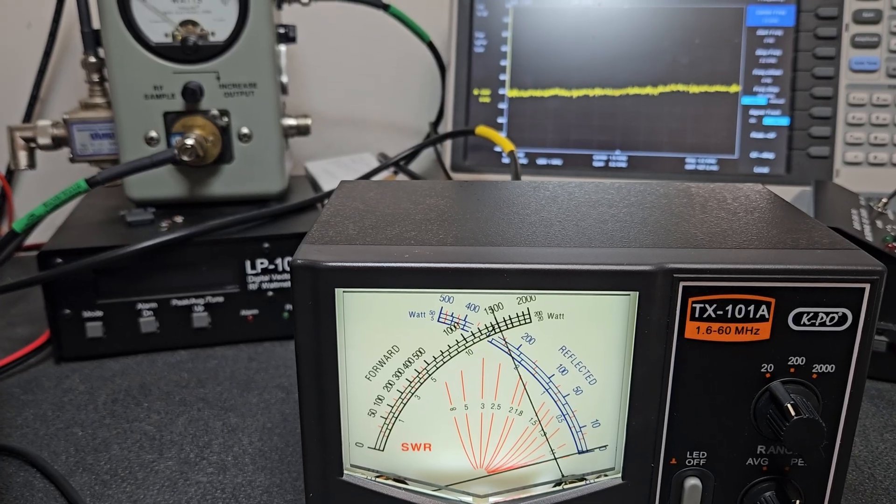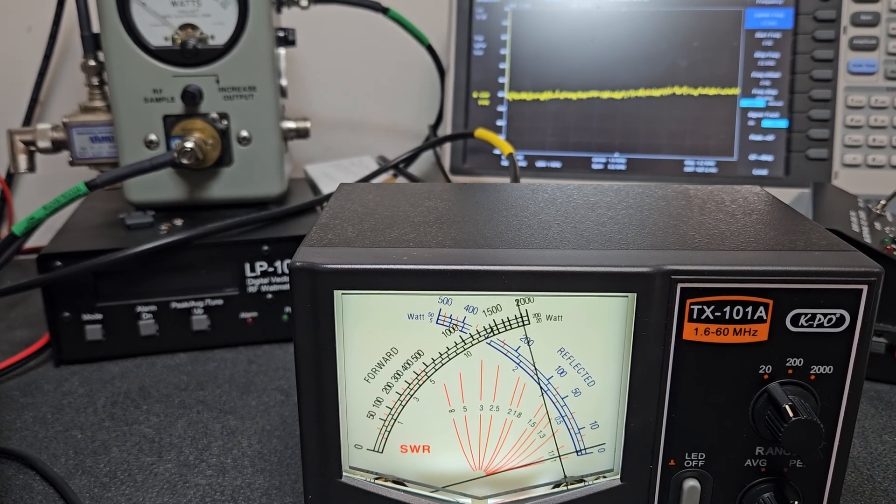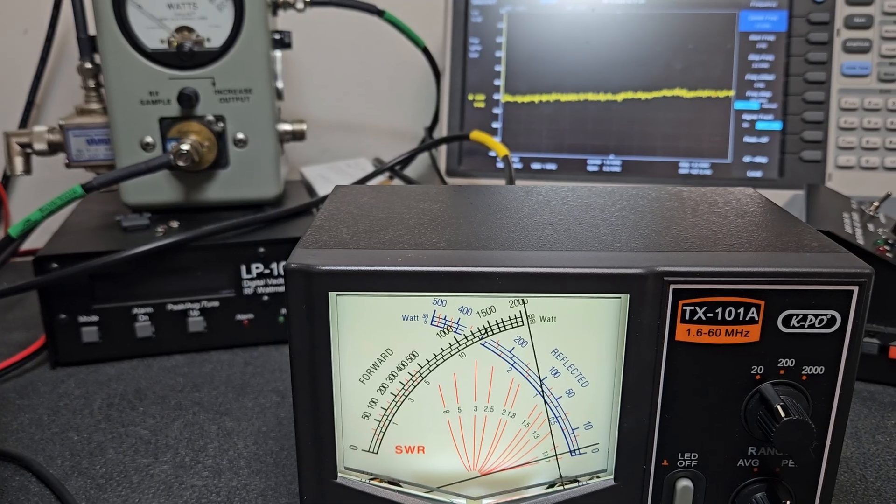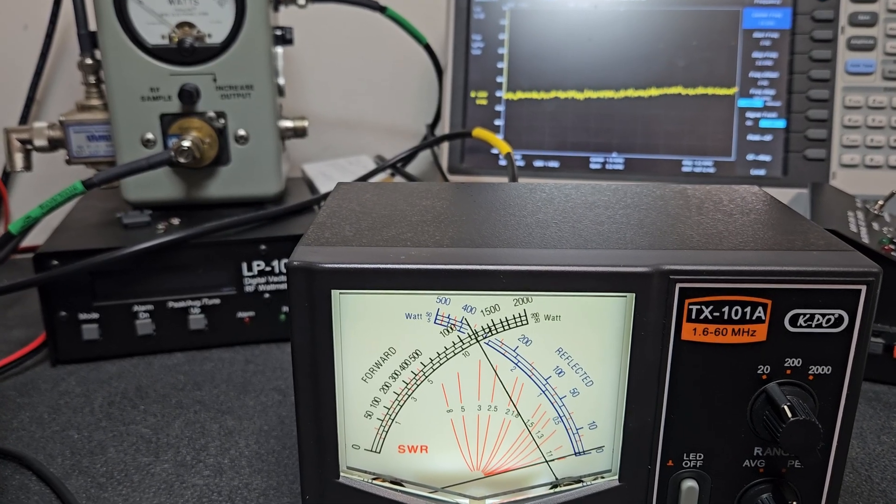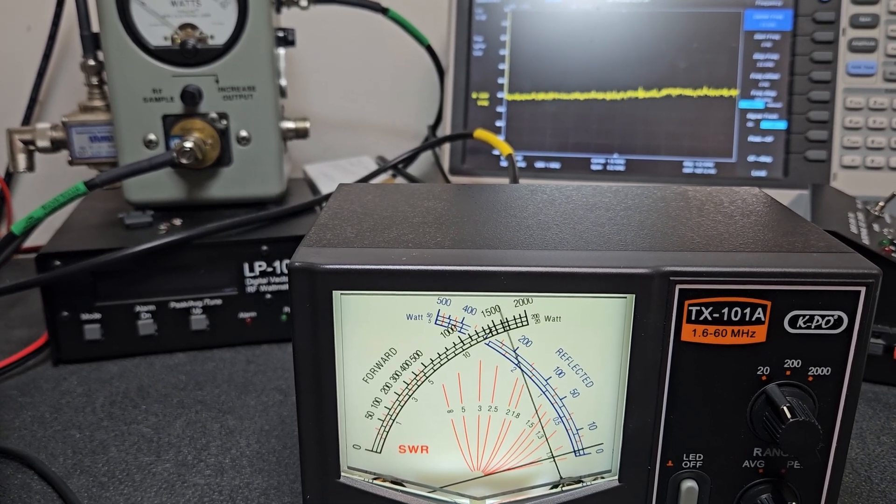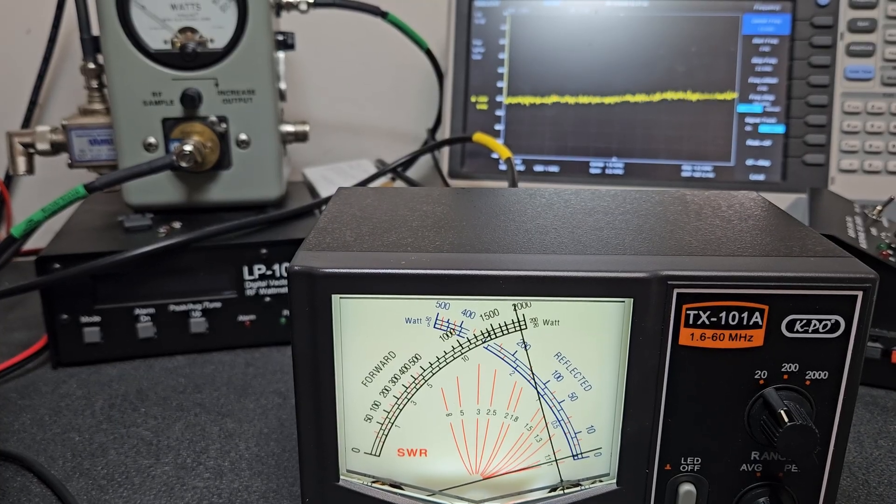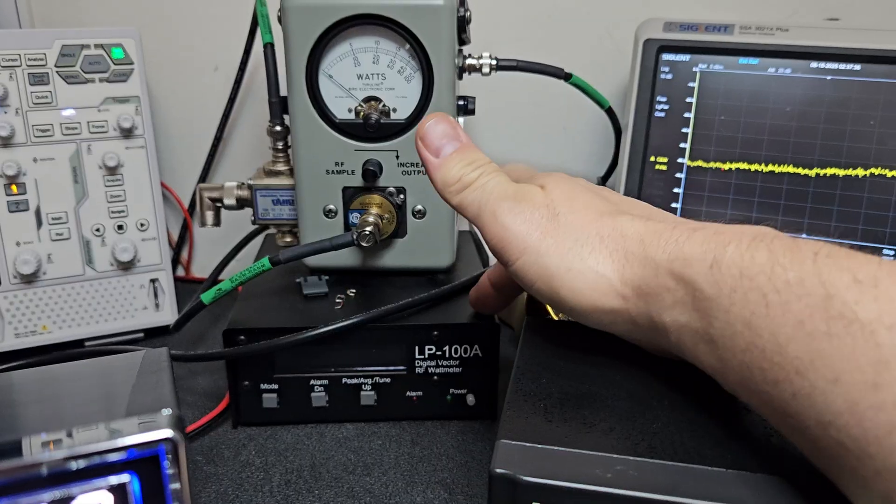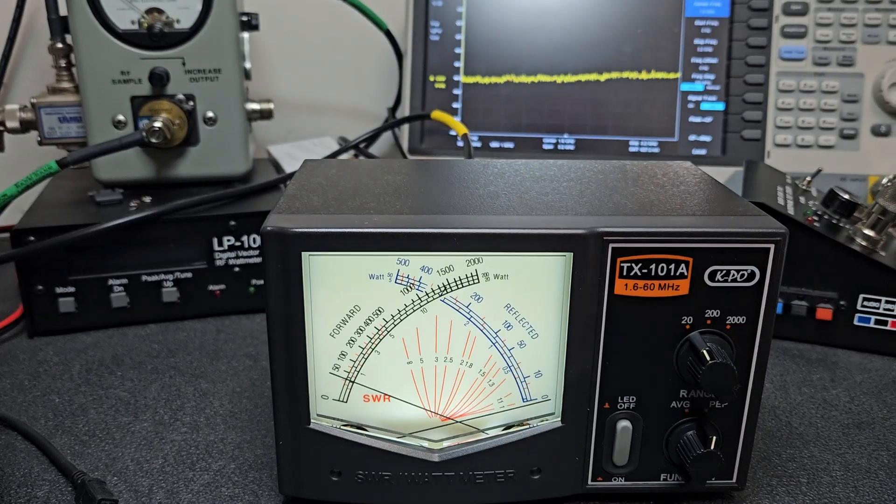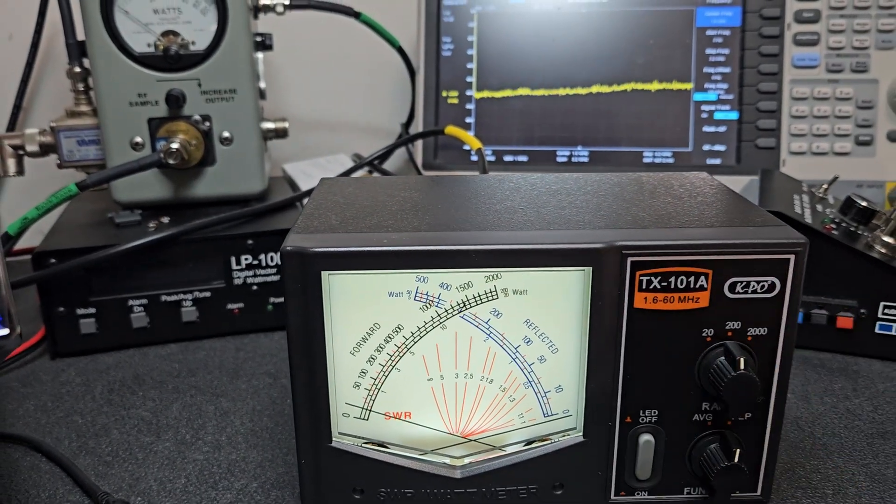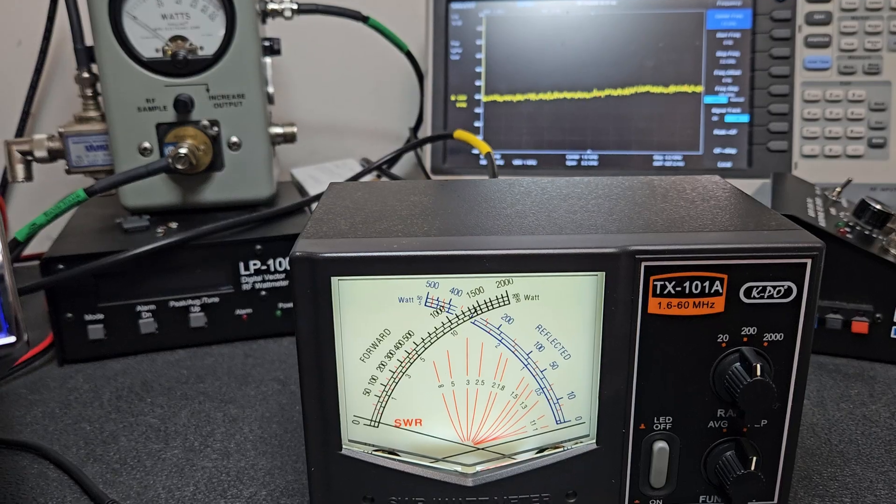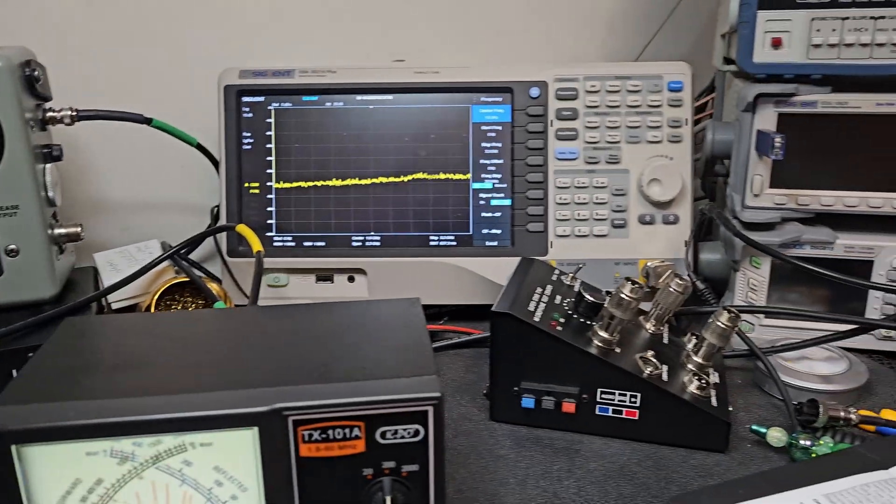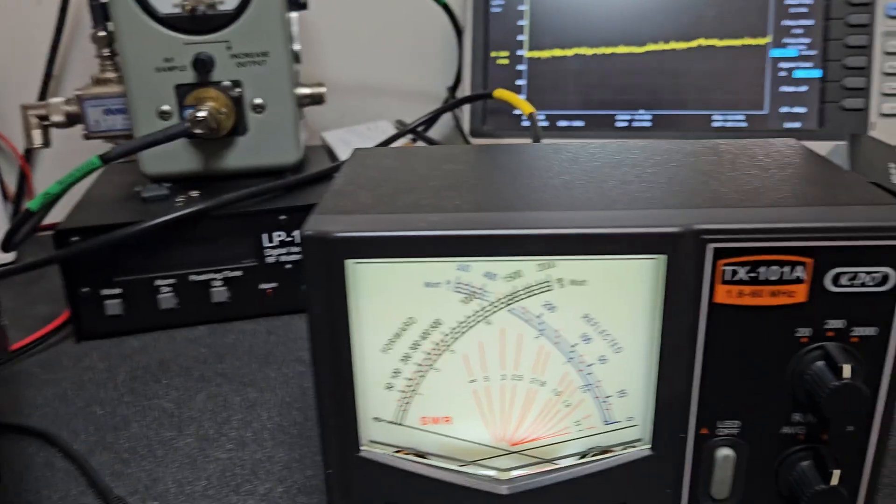I have an MFJ giant watt meter, an Ameritron AWM-30B, and an assortment of other meters that I throw in line just because I like them, because I like how they look, the functionality of them. I don't always care to run the best of the best, which I would say this is probably the best for measurement.